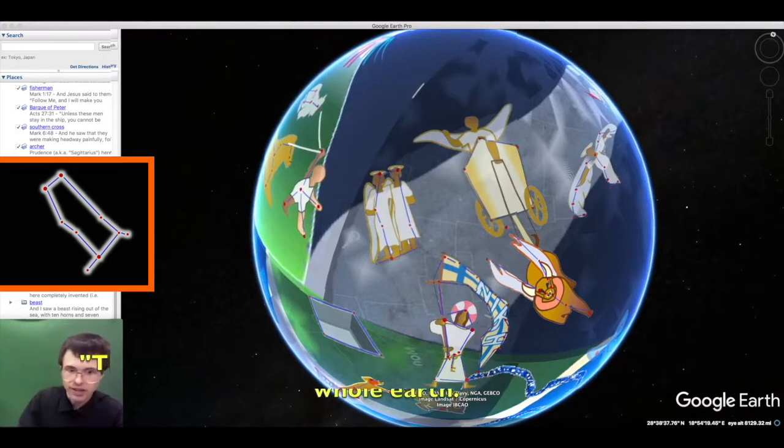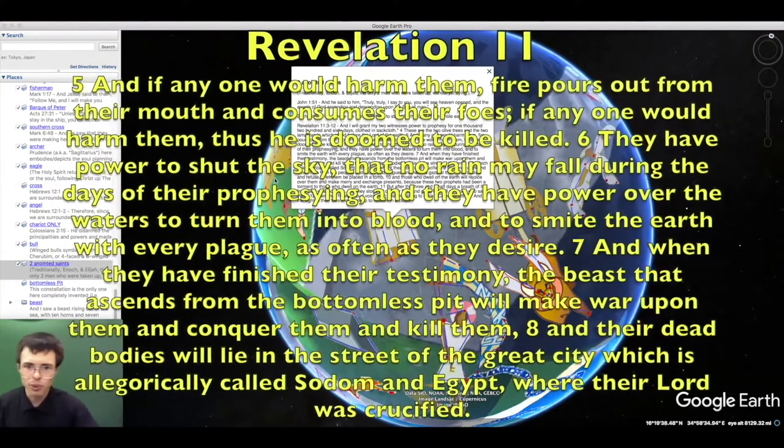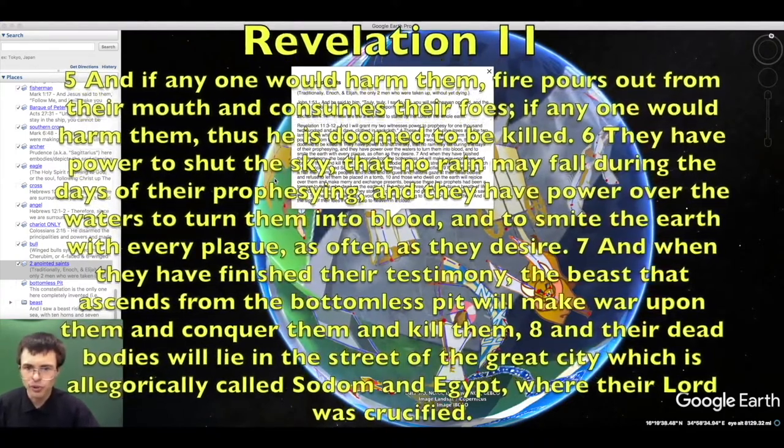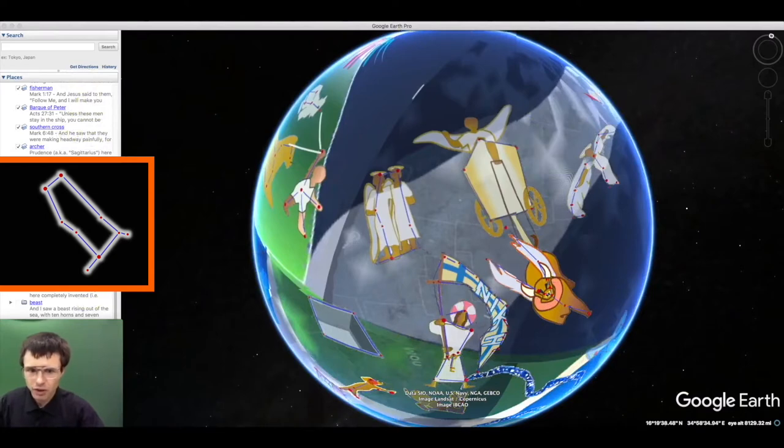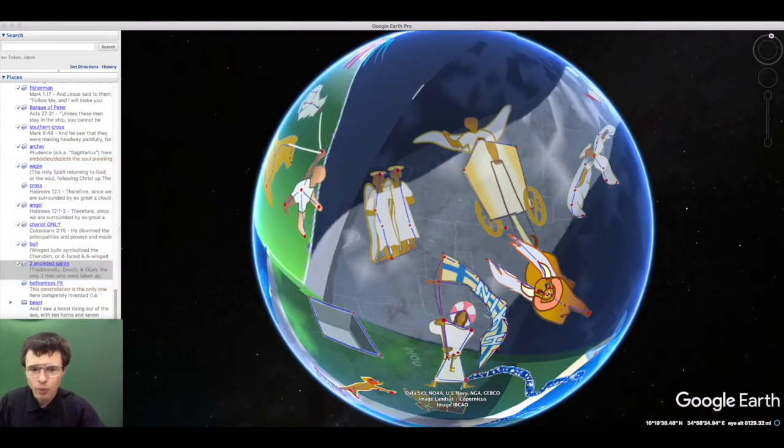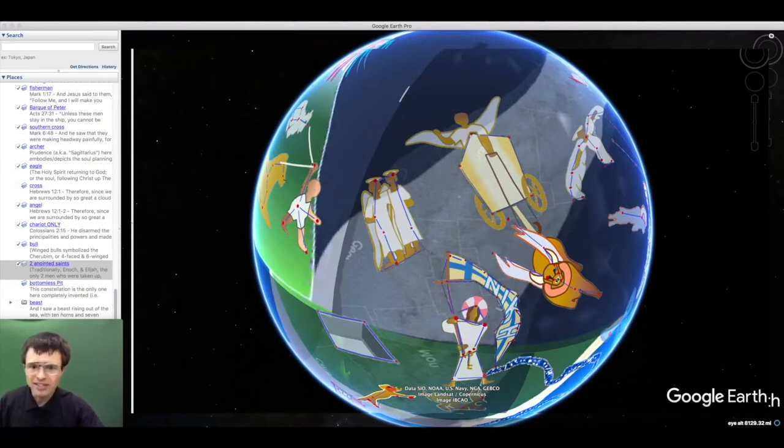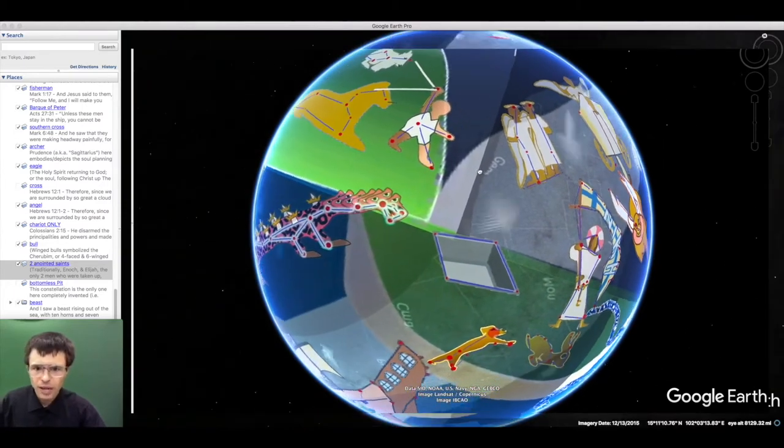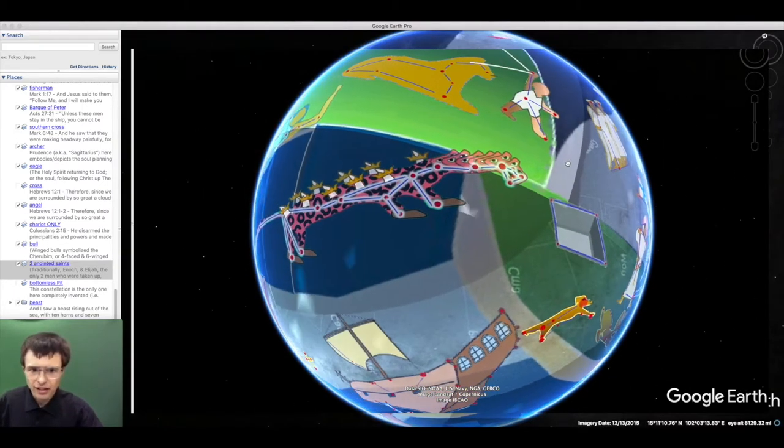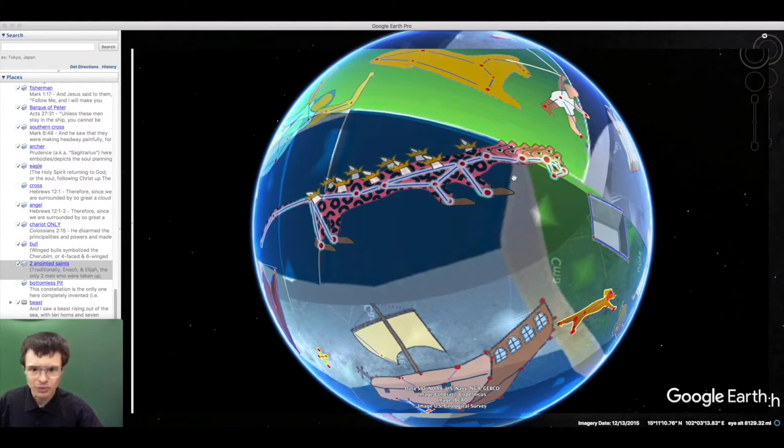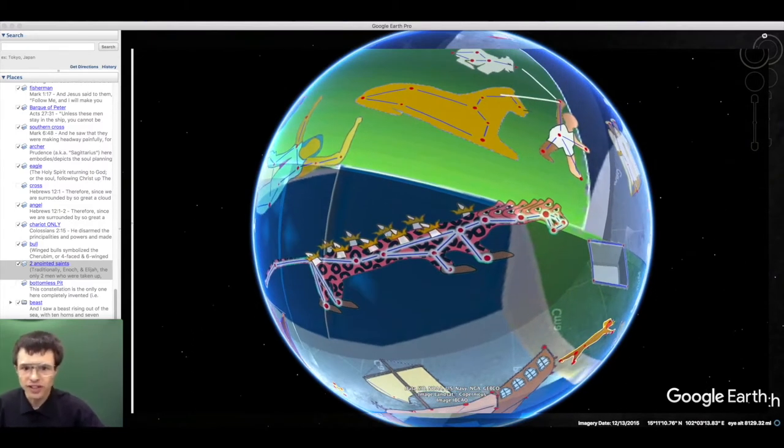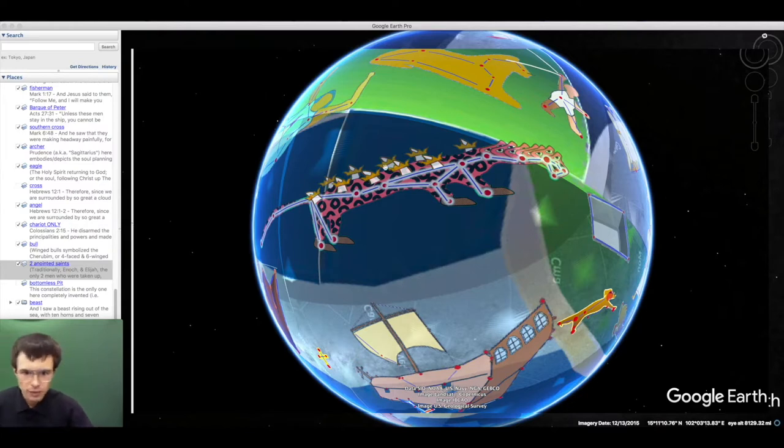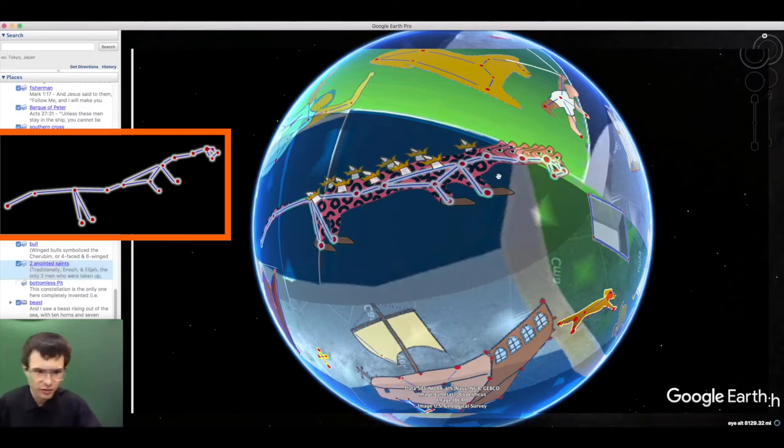And I will grant my two witnesses power to prophesy. These are the two who stand by the Lord of all the earth, as the book of Zechariah said. And Jesus said to him, truly, truly, I say to you, you will see heaven opened and the angels of God ascending and descending upon the Son of Man. And in this case, we have the constellation Gemini. These are the two anointed who stand by the Lord of all the earth. Traditionally, it refers to Enoch and Elijah, who were the only two humans who were taken up without yet dying. They will die at the end. And if anyone would harm them, fire pours out from their mouth and consumes their foes. And when they have finished their testimony, the beast that ascends from the bottomless pit will make war upon them.